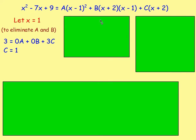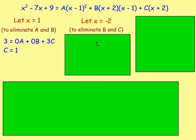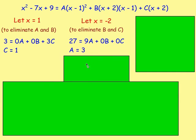Now let's choose a different value of x to find a or b. We've got x plus 2 — if that equals 0, it would eliminate b and c as well. So set x plus 2 equal to 0, therefore x equals negative 2. If x equals negative 2: negative 2 squared take away 7 times negative 2 add 9 gives 27. Then (−2−1) is negative 3, squared is 9, giving 9a. And we'd have 0b and 0c. Therefore 9a equals 27, so a equals 3.